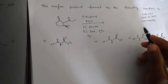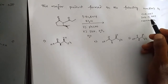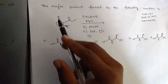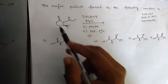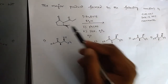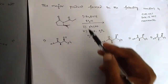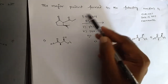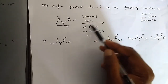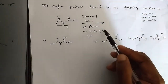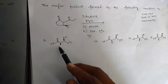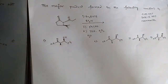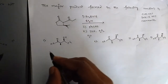Hi, this is your Chem Master. This question appeared in CSIR NET June 2017. The question is: the major product formed in the following reaction. We have a reactant with conditions including boron triethylamine and benzoyl lithium, alcohol, hydrogen peroxide, and water. We need to find the product from the four options given.